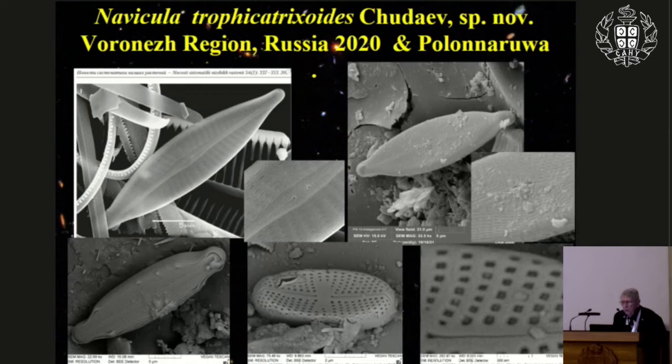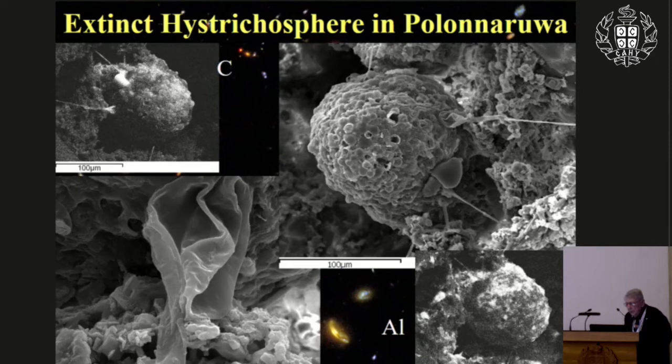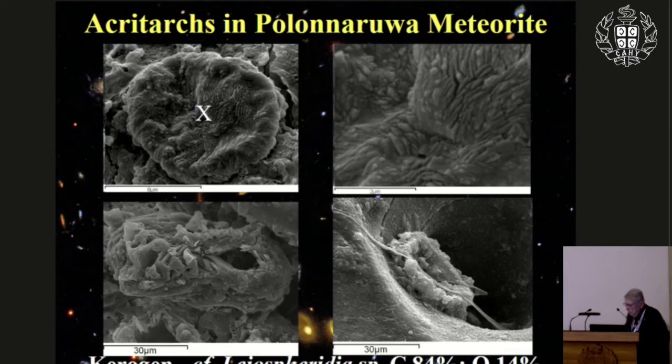We also find very strange structures in Polonarua — a hystricosphere, whose kind has been extinct on Earth for about 500 million years, showing incredibly long spines over a 100-micron scale. We find what I believe may be an acritarch with a very complex interior structure. We also find long filaments of bacteria, sometimes vibrio forms, and sulfur and sulfate-reducing bacteria.